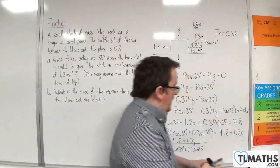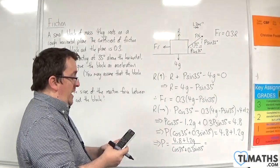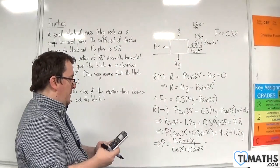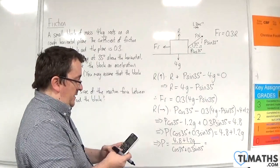So let's work that out. 4.8 plus 1.2 times G, and I'm using 9.8, over cos 35 plus 0.3 times sin 35.